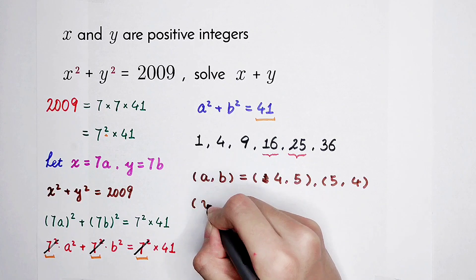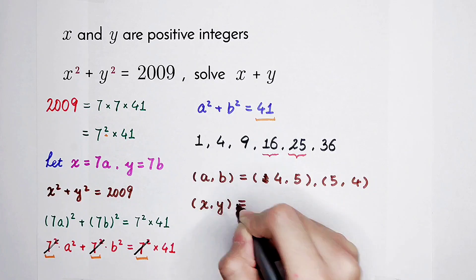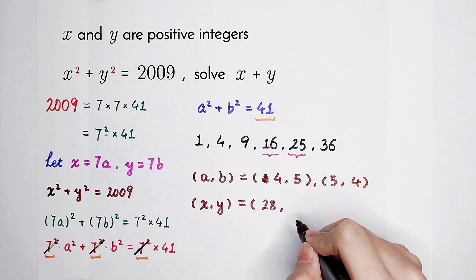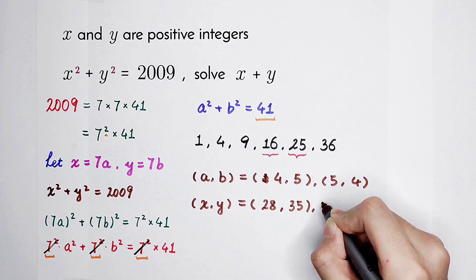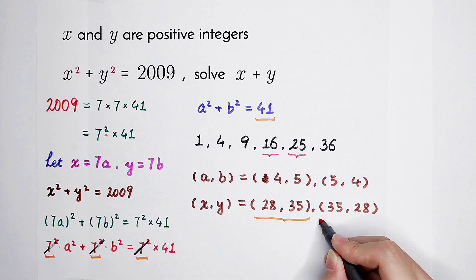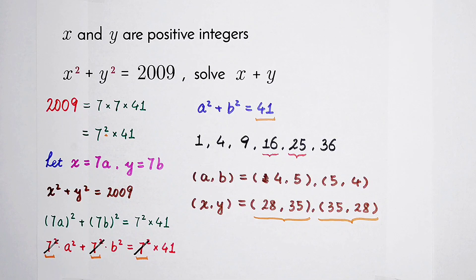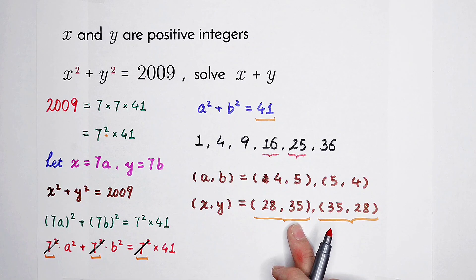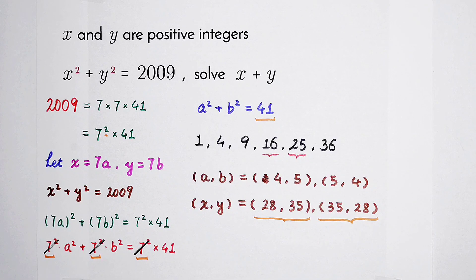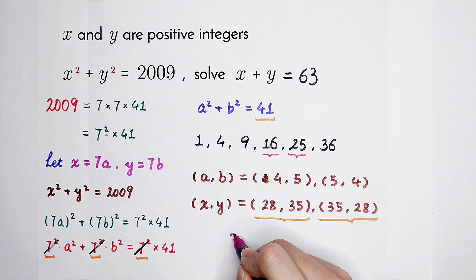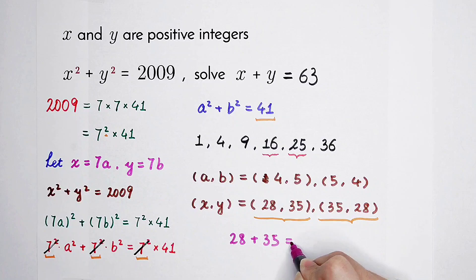And the solution pair of x, y. x is 7 times a. 7 times 4 is 28. y is 7 times b. 7 times 5 is 35. And then 35, 28. Two solution pairs of x, y. But we have to solve for the value of x plus y. In each case, we have x plus y is equal to 28 plus 35 is equal to 63. Since 28 plus 35 is equal to 35 plus 28, so the value of x plus y is 63.